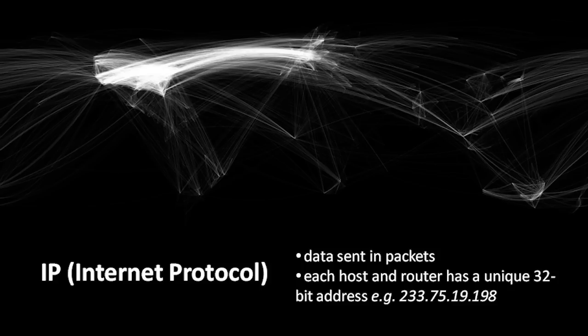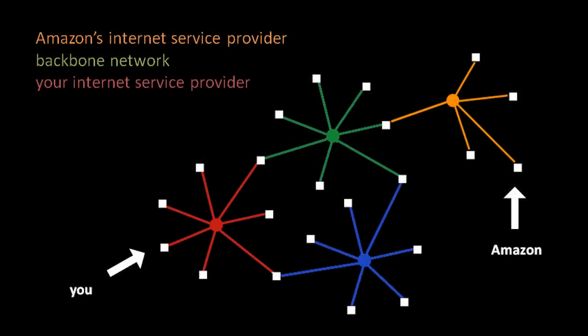As a user, you generally don't have to directly deal with IP addresses, but you'll occasionally see them around, so it's nice to recognize them. To illustrate how the internet works, imagine a scenario where you go onto the internet to order something from Amazon.com. Amazon is an online retailer, and for such a transaction to take place, there has to be communication between your computer and a computer belonging to Amazon.